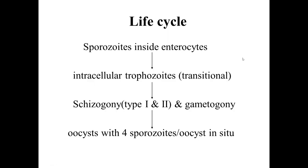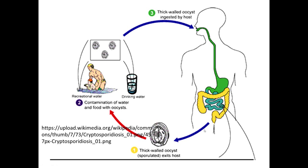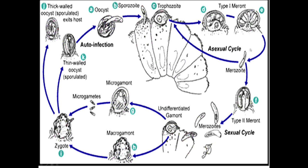In the life cycle, a sporozoite enters intestinal cells and forms trophozoites, which undergo schizogony types 1 and 2, gametes and a zygote are formed, and finally oocysts are released containing 4 sporozoites. Contaminated food or water containing oocysts is ingested, and the thick-walled oocyst goes to the intestine and completes the cycle. Type 1 and type 2 merons are formed through the asexual cycle, then gametes form, sexual reproduction occurs, and 2 types of oocysts are released. The thin-walled oocyst causes autoinfection, while the thick-walled oocyst is excreted and is the infective form.